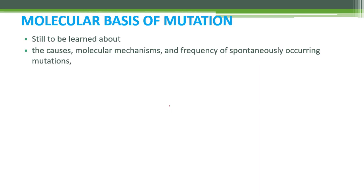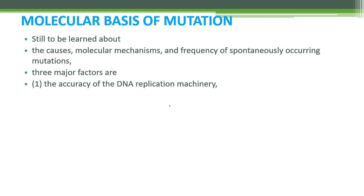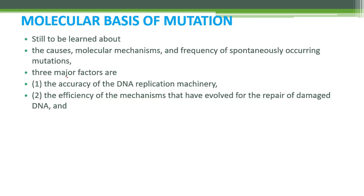There are many things about which we still need information — the causes, molecular mechanisms, and frequency of spontaneously occurring mutations. The relevant factors include the accuracy of the DNA replication machinery, and the efficiency of mechanisms that repair DNA damage. The more efficient the DNA repair mechanism, the lower the chances of spontaneous mutations.